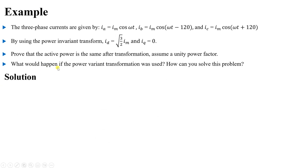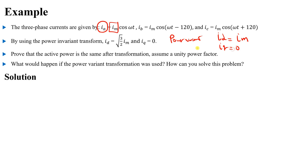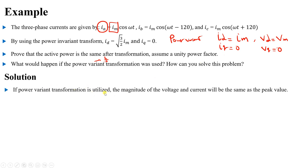Now let's see what happens if we use the power variant transformation instead. With the power variant transformation, the magnitude of id equals exactly the peak value Imax — the same as the peak of ia — and iq remains zero. Using the 2/3 coefficient in the Clark-Park transformation, Vd = Vmax and Vq = zero.